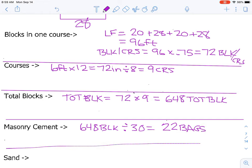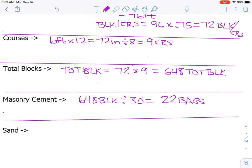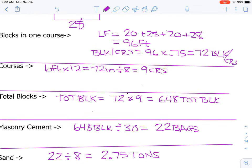And then for the sand, the rule of thumb is the same that it's always been. We take 22 and divide it by eight because for every eight bags, we will need another ton of sand. And 2.75 tons. That's walking you through the whole process.